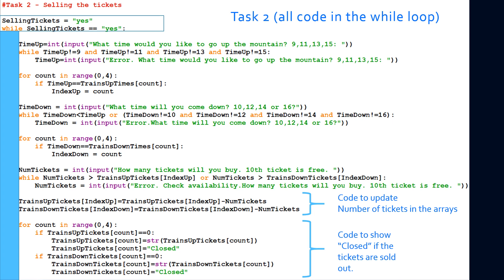To revise from the last video, we have time_up as an input. The time_up has to be either 9 o'clock, 11 o'clock, 13 o'clock, or 15 o'clock. Then we locate the index that basically pertains to the time that they chose.